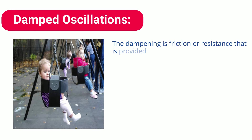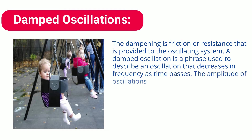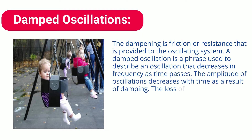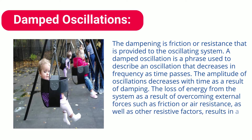The dampening is friction or resistance that is provided to the oscillating system. A damped oscillation is a phrase used to describe an oscillation that decreases in amplitude as time passes. The amplitude of oscillations decreases with time as a result of damping — a loss of energy from the system due to overcoming external forces such as friction or air resistance, as well as other resistive factors, resulting in a reduction in amplitude.